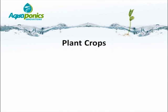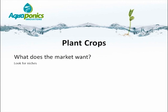That brings us to the end of the fish crops. There are many other options, but let's look at the plants — the third major component of an aquaponics system. When considering plants, the starting point has to be what the market wants. Look for niches, because niches will often offer better value for money. And look for unseasonal crops — those will also offer high profit potential.